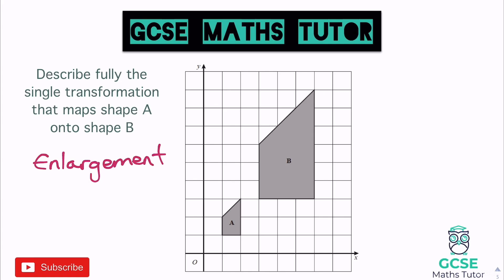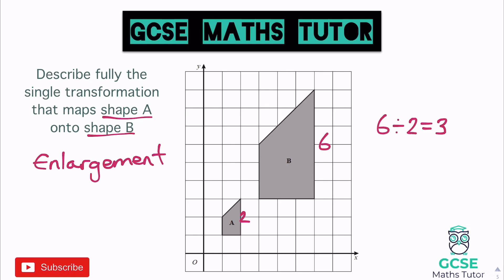Finding the scale factor is quite straightforward. The right side of shape B is six down, and the corresponding side of the smaller shape is two down. Going from A to B, it's going from two to six. Six divided by two tells us it's getting three times bigger, so the scale factor is three. We write: enlargement, scale factor three.